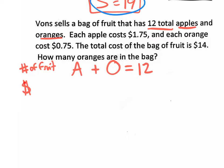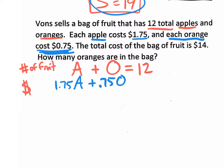Now let's make an equation based on money. Each apple costs $1.75, so we put 1.75 times each apple — that's 1.75A. Each orange costs 75 cents, so we put 0.75O. The total cost of the bag is $14, so: 1.75A + 0.75O = 14. That is the money equation.